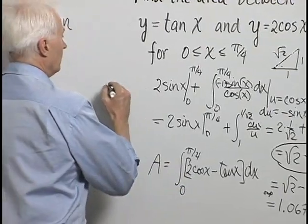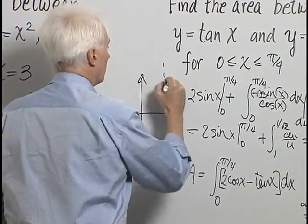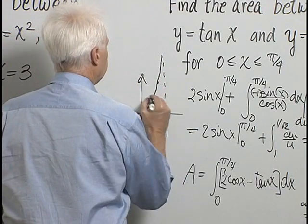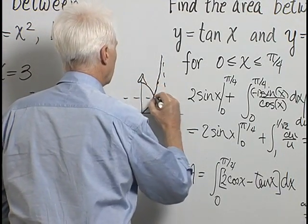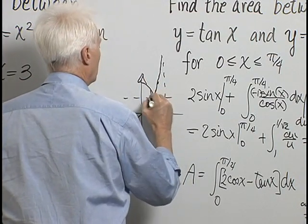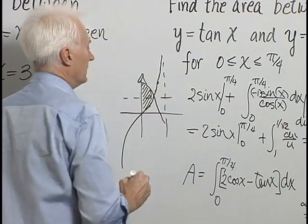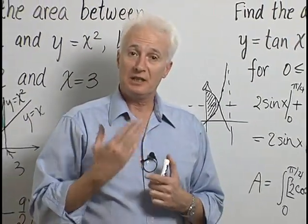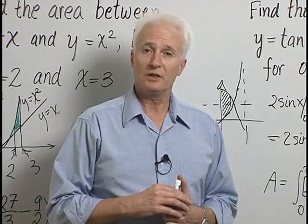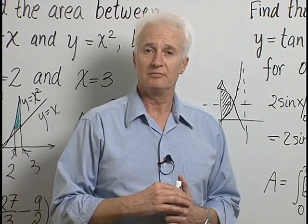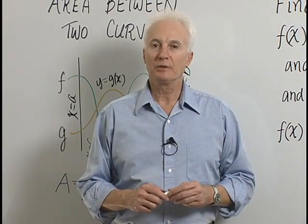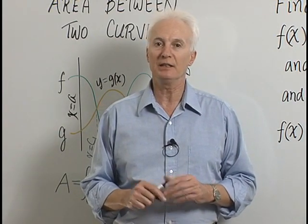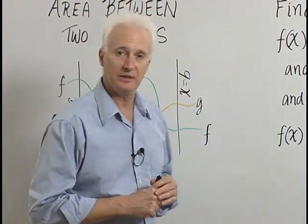Just to briefly show what we found: here's our graph of the tangent function, y equals 1, and 2 cosine x coming down, and so we found this little area between the two curves is about 1.0676, because we integrated the difference of the two functions after finding which one is on top during the interval. Now, sometimes we're faced with finding the area between two curves where those two curves cross each other several times, so let's see how to deal with this situation.